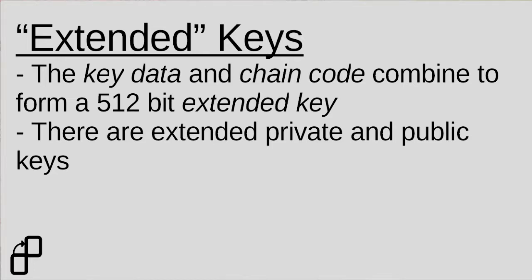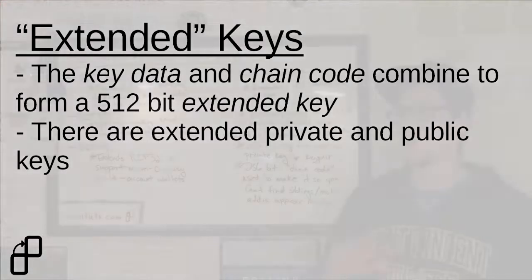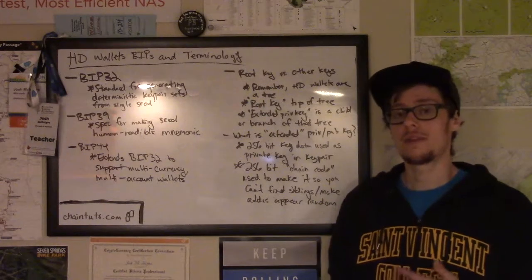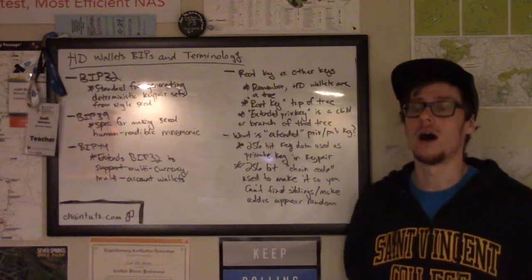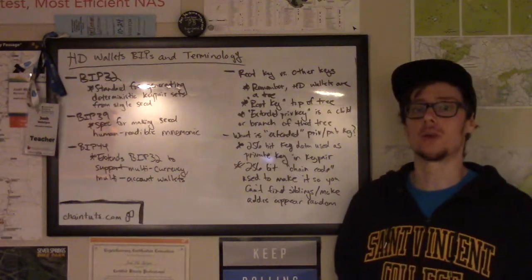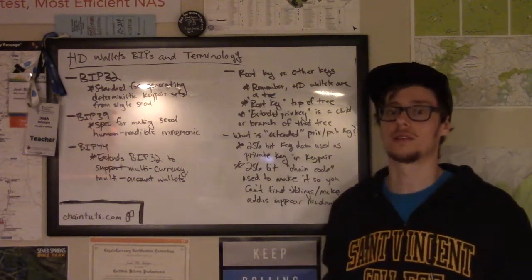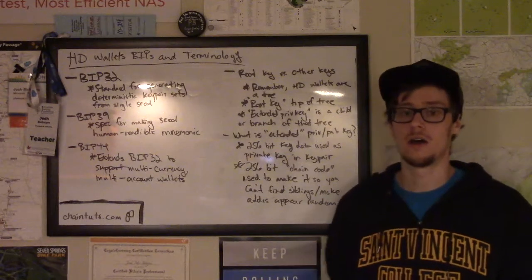There's also an extended public key format. It's a slightly different size — it contains bits for the extended public key and also a chain code. We're not going to go into all the details in this video, but this should give you a better idea of the terminology and the distinction between root keys and other extended keys on your tree.